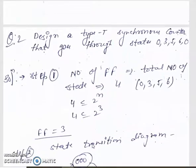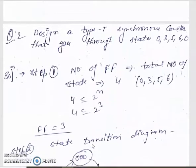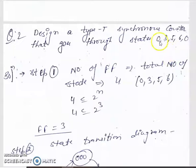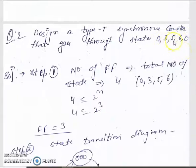Next: design a type-T synchronous counter that goes through states 0, 3, 5, 6 and back to 0. This counter visits 4 states — 0, 1, 2, 3 in the sequence — so it counts 4 states, making it mod 4.